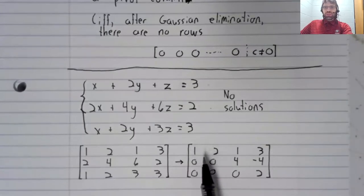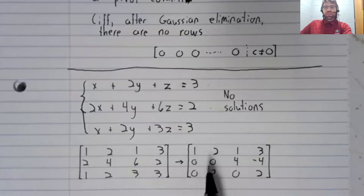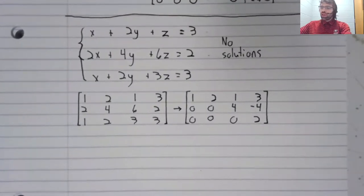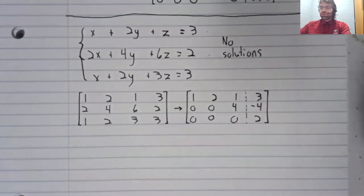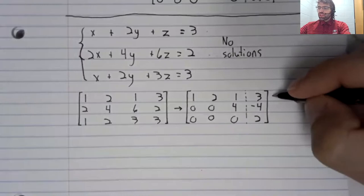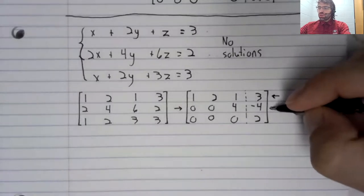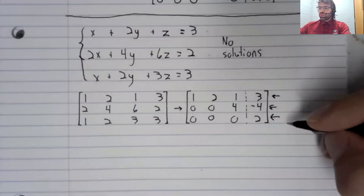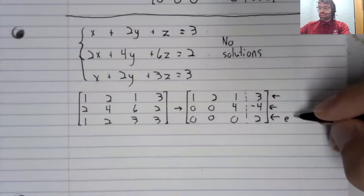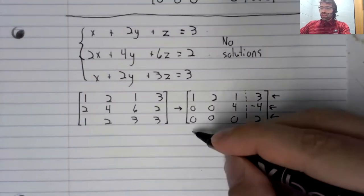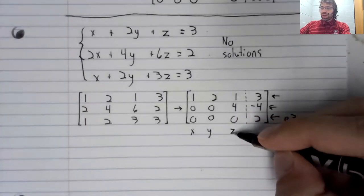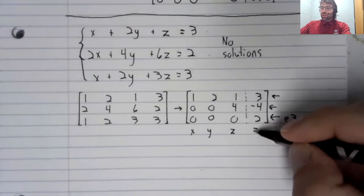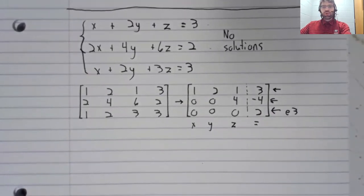But why does it mean that? Why does this theorem work? Well, remember, when we have an augmented matrix, each row corresponds to an equation. And each column corresponds to a variable, except for the last column, which corresponds to equality.